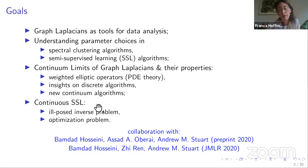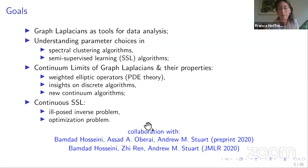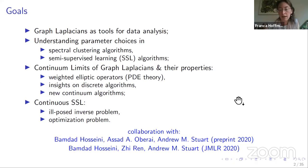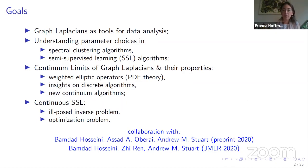I will talk about continuous semi-supervised learning, which can be formulated as an inverse problem — a very ill-posed one — and we will look at a relaxation of that problem. Most of the mathematical results I'll discuss today can be found in two pieces of work: one with Bamnet, Hosseini, Andrew Stuart from Caltech, and Asad Obri from USC, and another publication with Bamnet, Ziren, and Andrew published in July this year.